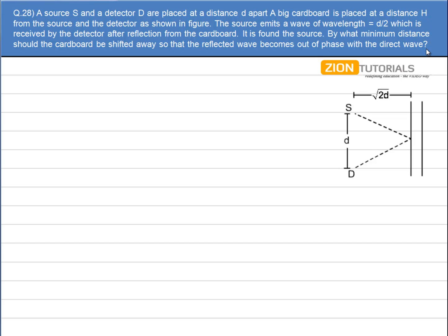Now first of all, the two waves are in phase - the one coming directly and the other is the reflected one. So first I will calculate the path difference and that has to be equal to n lambda.